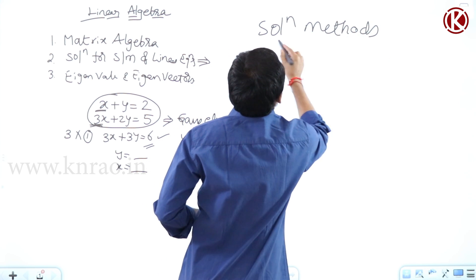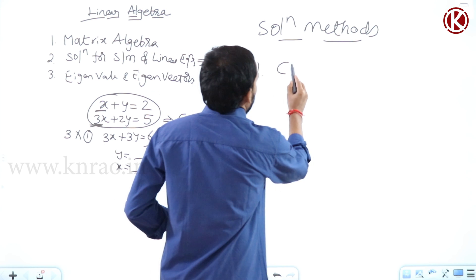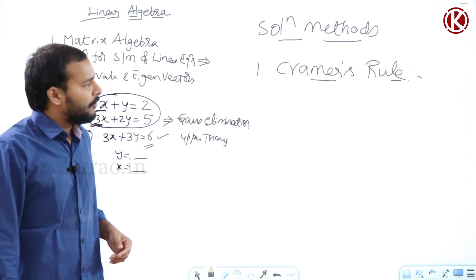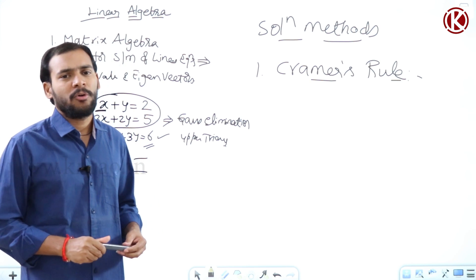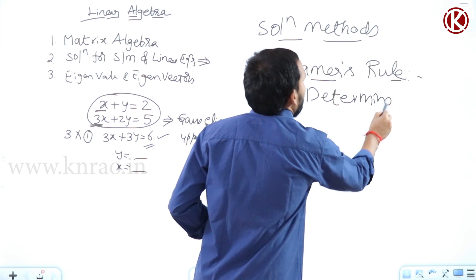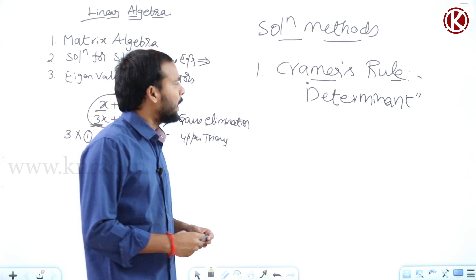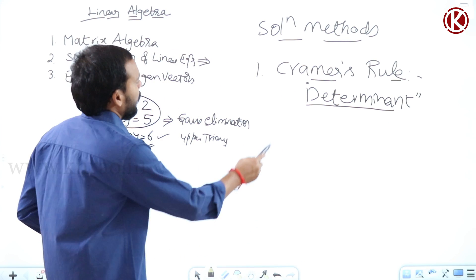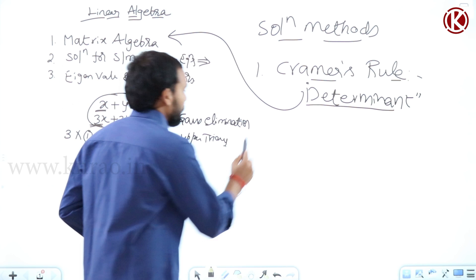The solution methods for system of linear equations include: first, Cramer's Rule. In Cramer's Rule, the number of unknowns can be anything, and the unknown values are found using the determinant property of a matrix. We get the concept of determinants from matrix algebra.